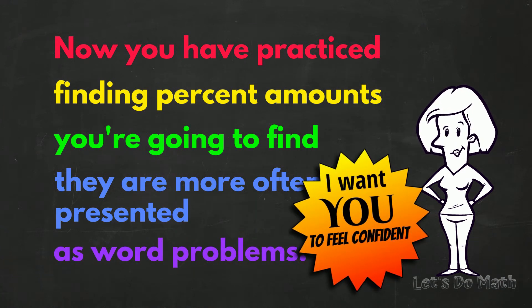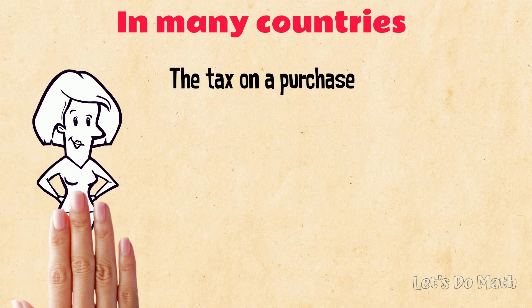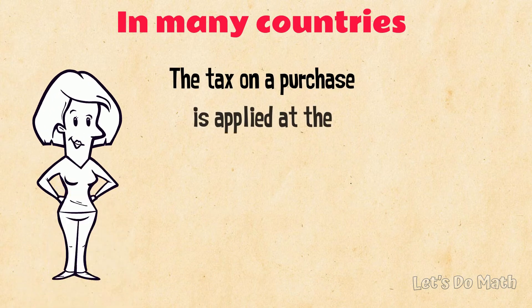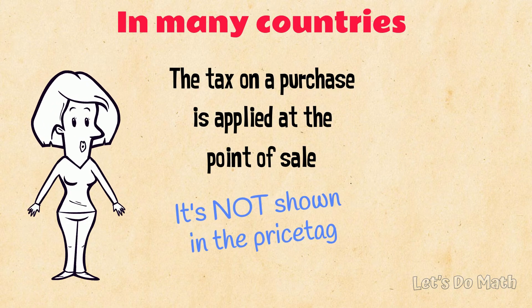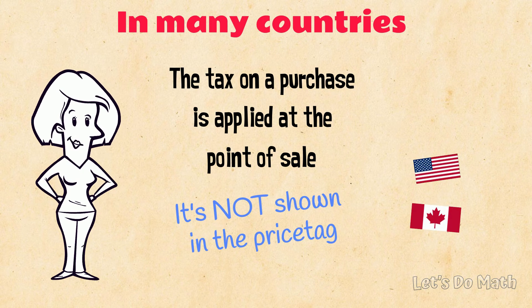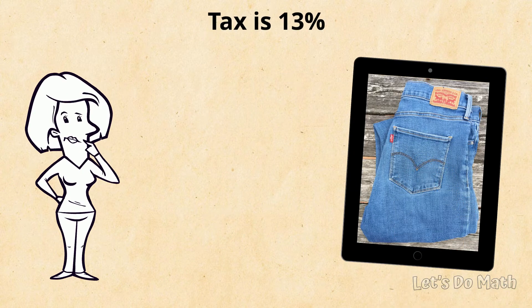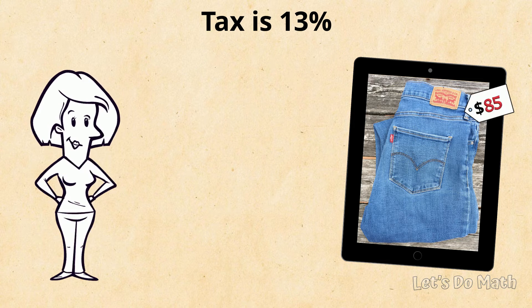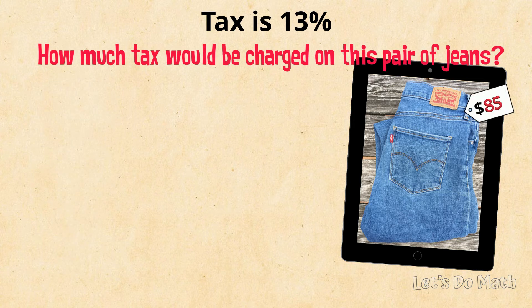In many countries, the tax on a purchase is applied at the point of sale — it's not shown in the price tag. It's like that in Canada. Let's say I'm buying a pair of jeans. The tax is 13% and the price tag says $85. How much tax will be charged on this pair of jeans?